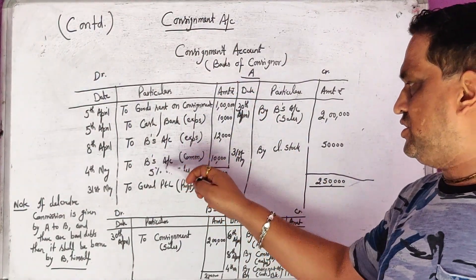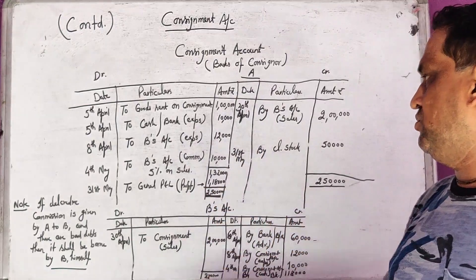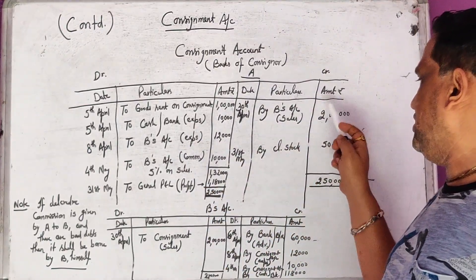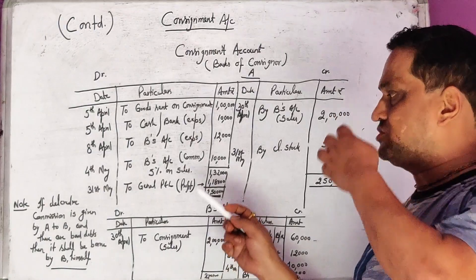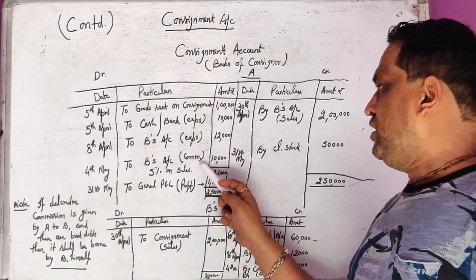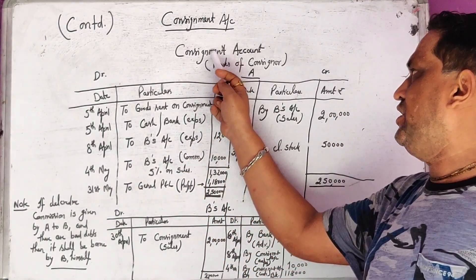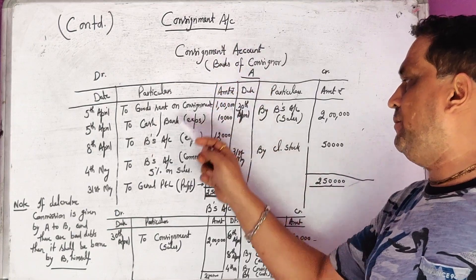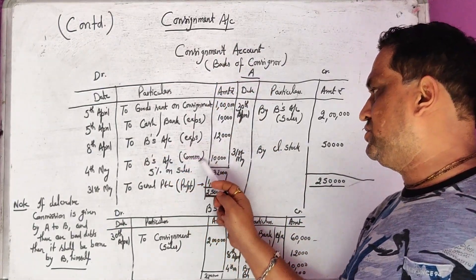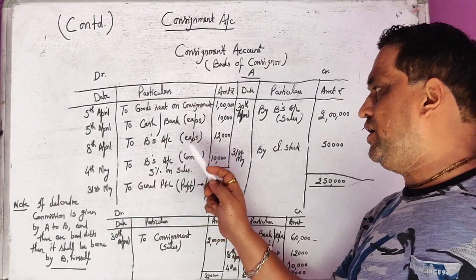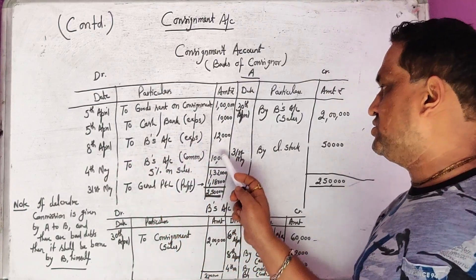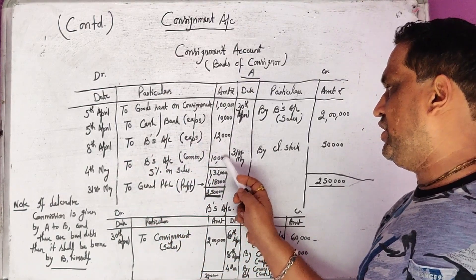In this question, we have 2 lakhs in sales. Commission is 5% on sales. The entry is: consignment account debited to B's account with a note for commission. The commission amount will be 10,000.